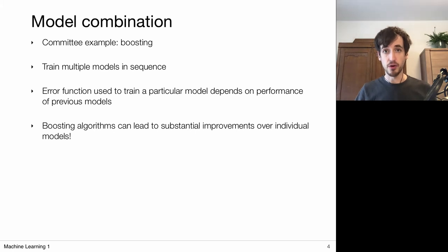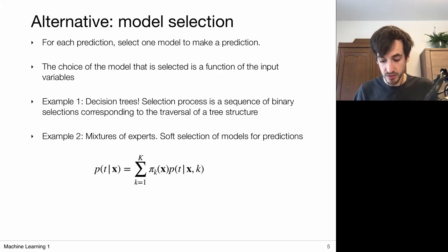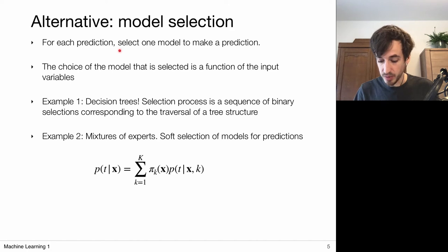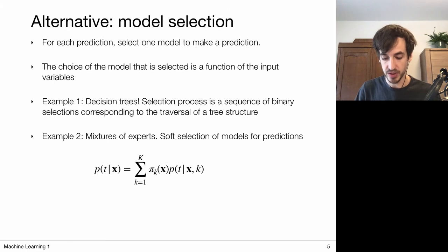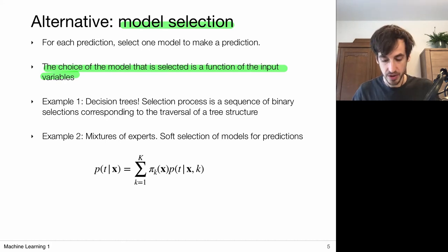Once we have a committee we can make a prediction by averaging the response of all predictions. Alternatively, we can look at this as model selection — from the committee of models, for each prediction we select just one model to make the prediction. That particular model is supposed to be the expert: the predictive model that does the best job on the particular input presented to it. In a model selection approach we select the model based on the input via a selection mechanism. A famous example of such methods is a decision tree.